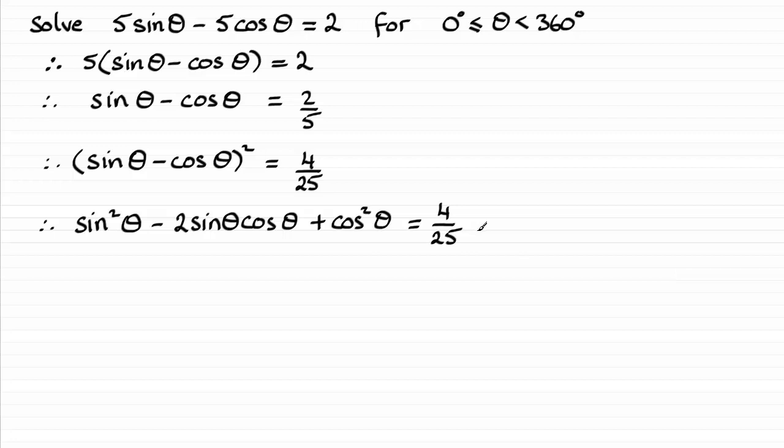Now we should pick up on a couple of identities. You should be familiar with the identity sin²θ + cos²θ. That's identical to 1. And also this 2sinθcosθ should recognize that as being sin2θ. I'll put them in here just as a reminder.